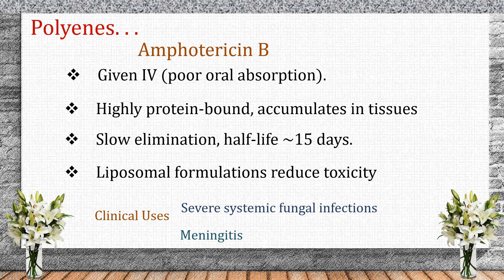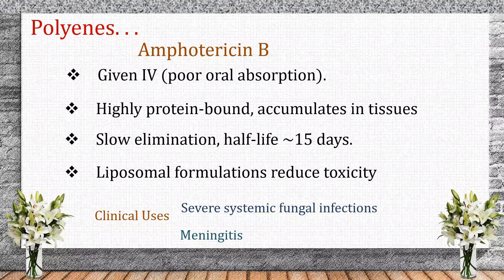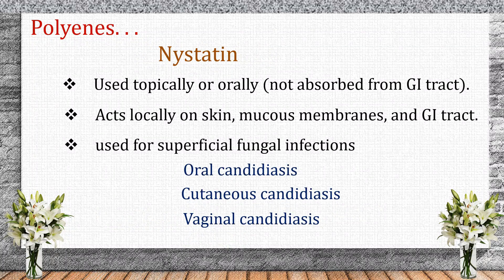Amphotericin B is one of the most powerful antifungals but comes with significant toxicity. It is highly protein-bound, accumulates in the liver, spleen, and kidneys, and is given IV due to poor oral absorption. It has slow elimination with a half-life of 15 days. Liposomal formulations help reduce nephrotoxicity. Amphotericin B is used for severe systemic fungal infections. Nystatin is used topically or orally for superficial fungal infections like oral candidiasis and cutaneous candidiasis.